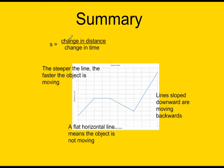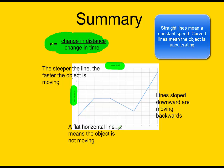In summary, speed is calculated by dividing distance, the change in distance, with the change in time. Speed is equal to the change in distance divided by the change in time. If we had a speed graph, which has distance on the y-axis and time on the x-axis, we're going to notice that the steeper the line is, the faster the object is moving. So this line shows the object moving faster than this line.